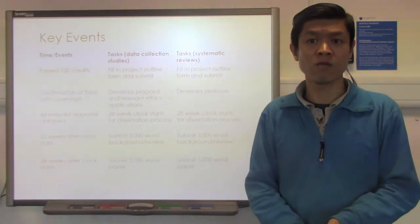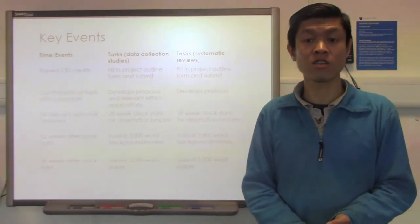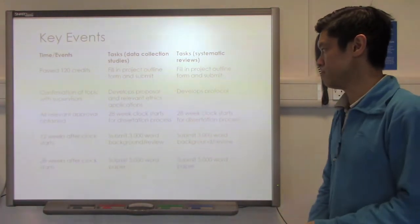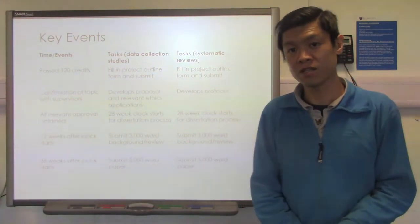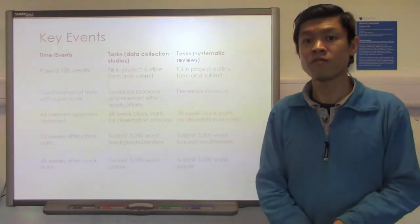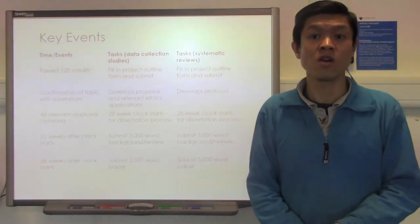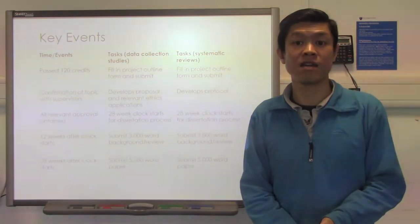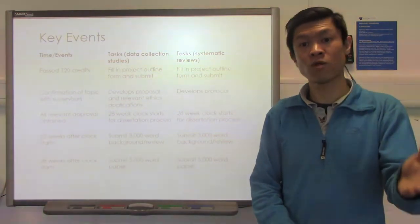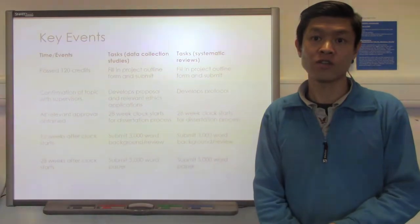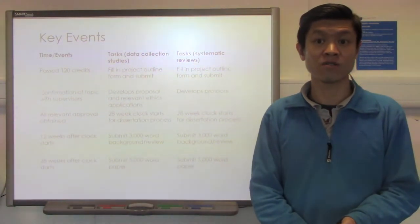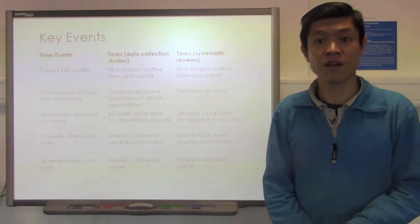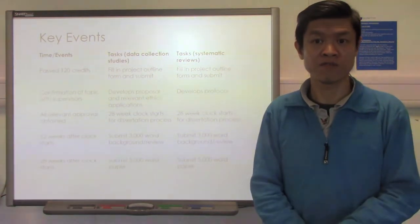The products we require from you in this dissertation module are actually slightly different from what a traditional dissertation module would require. The very first piece of work that will be graded is your 3,000-word background or review, which is required at the 12-week clock. So from the start of the 28-week period to week 12, that is the time to submit your first piece of work. The second and final piece of work will be the 5,000-word scientific paper, submitted at the end of the 28 weeks.